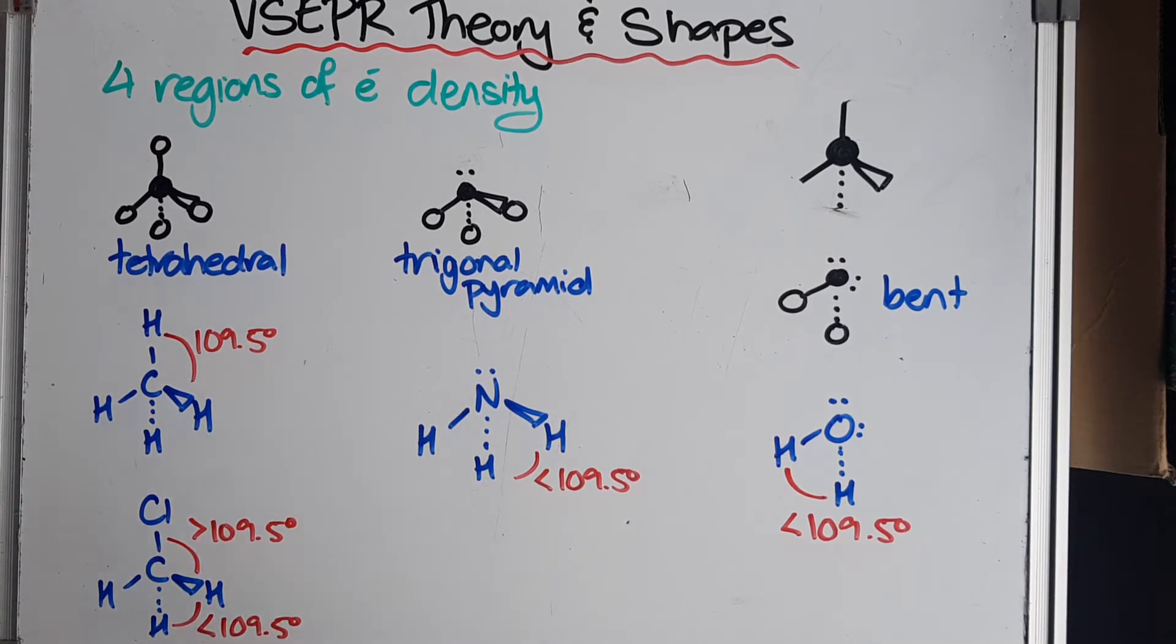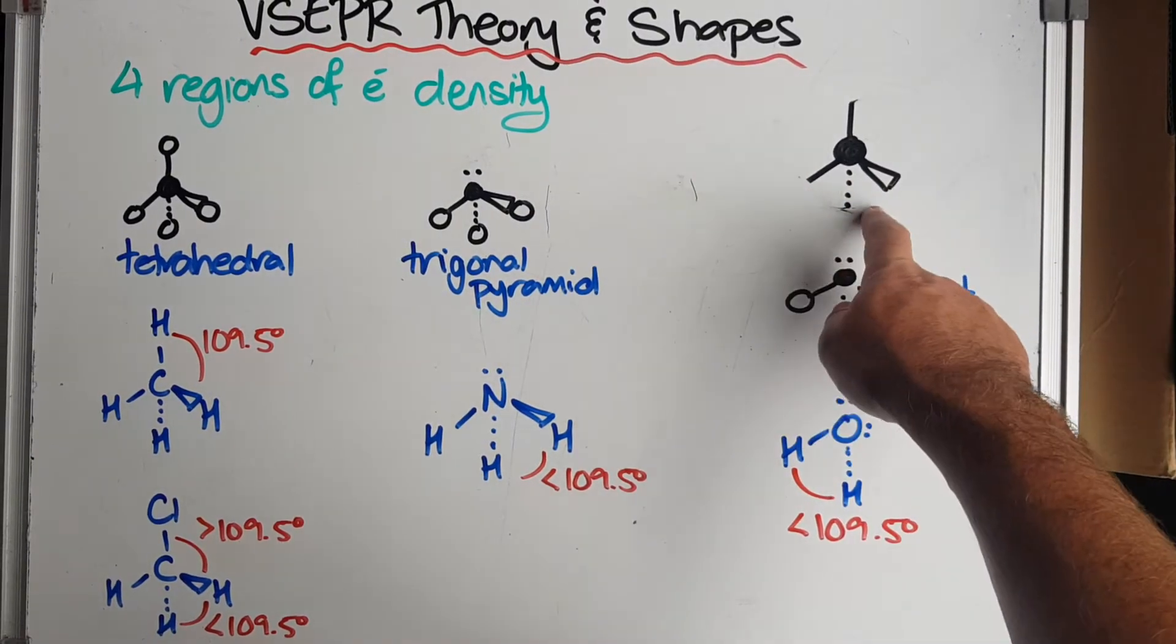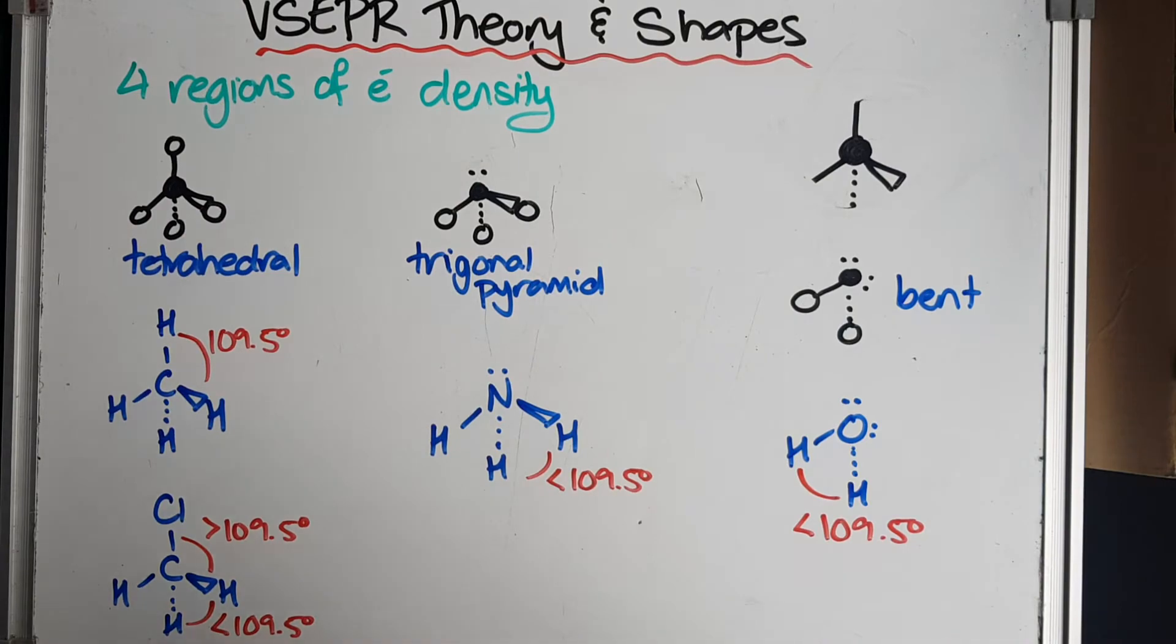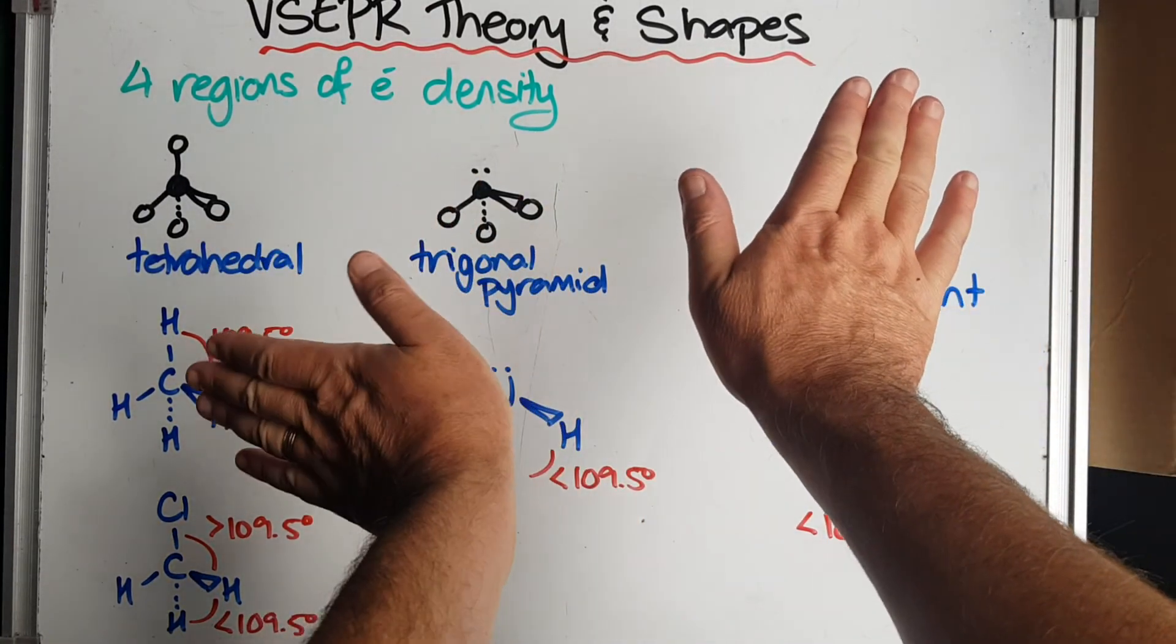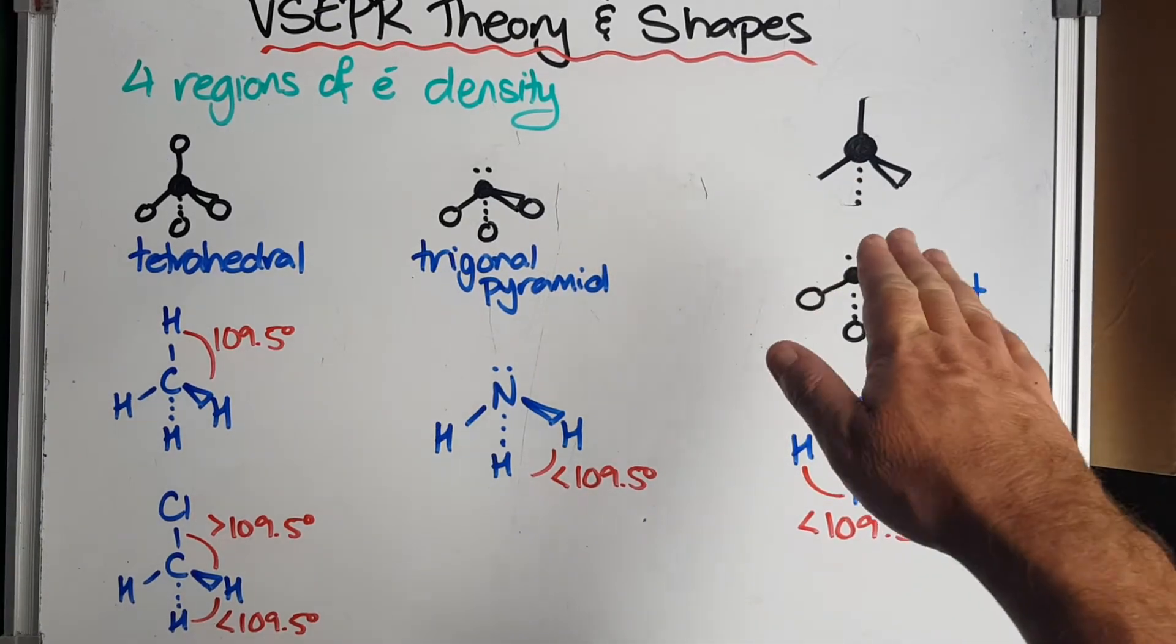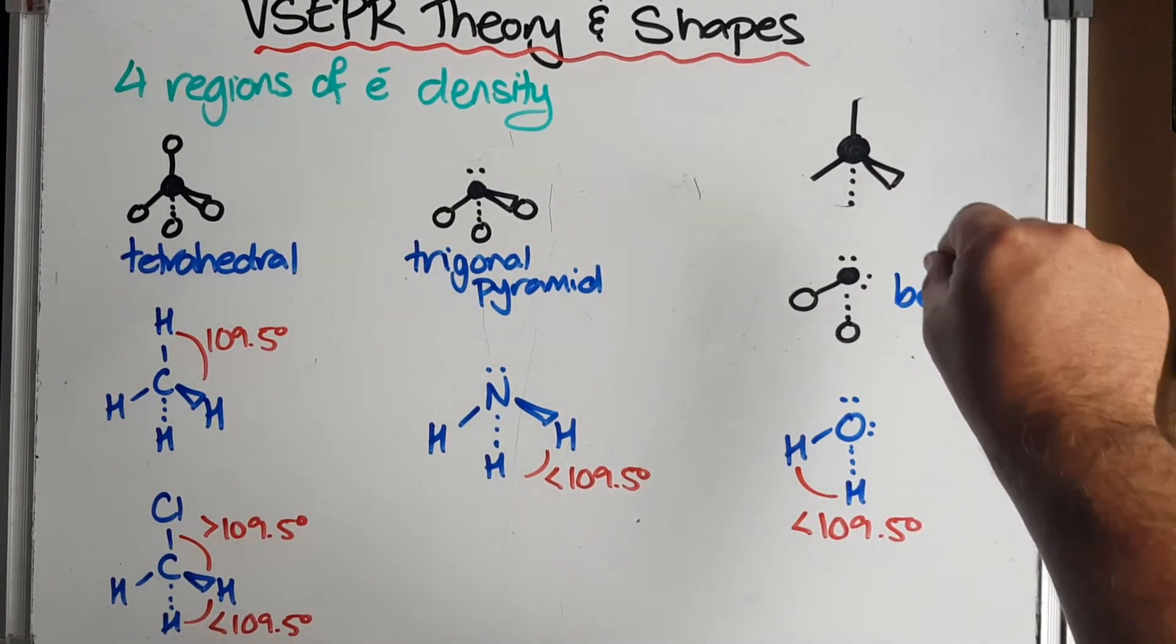So when we've got four regions of electron density in three dimensions, the way that these can repel each other most evenly is to have a bond angle of 109.5 degrees. What we've got is these two regions of electron density sitting flat on the whiteboard or on the page. This one is actually disappearing into the whiteboard or into the page a little bit, and this one is coming out.